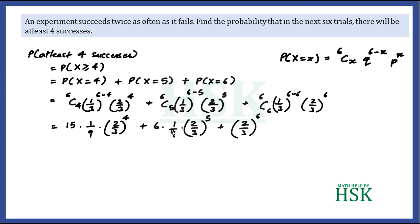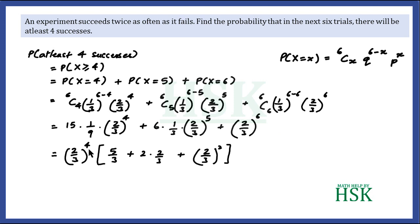For the five-success term, 6C5 = 6, q^1 = 1/3, and p^5 = (2/3)^5. For the six-success term, 6C6 = 1, q^0 = 1, and p^6 = (2/3)^6. From these three terms we can factor out (2/3)^4 as common. Then 15/9 simplifies to 5/3, 6 × (1/3) = 2, leaving a factor of 2/3, and the last term gives (2/3)^2.